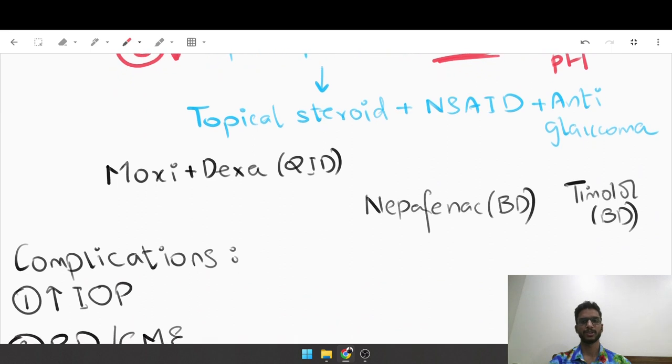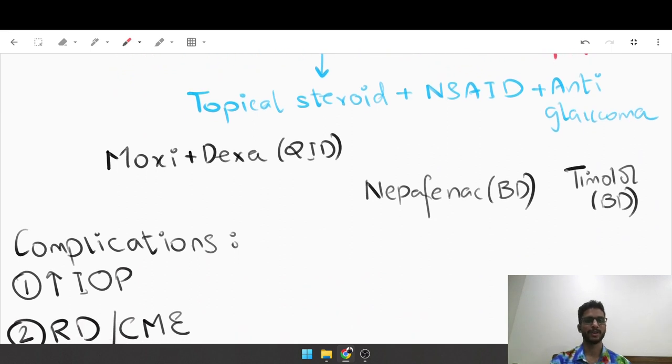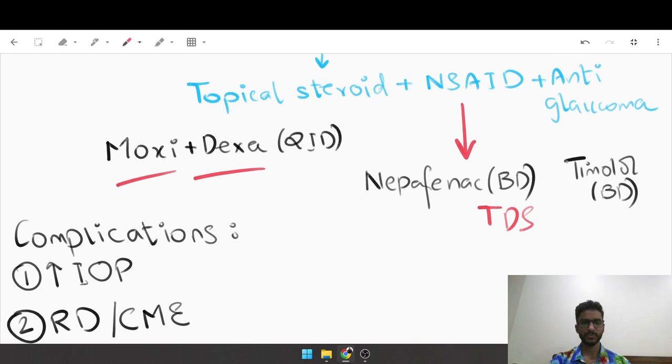Is the procedure done? No, after capsulotomy you have to perform certain therapeutic maneuvers. The first is instilling a topical steroid, an antibiotic and steroid combination to reduce the inflammation. These cells are going to get released into the anterior chamber and cause a rise in intraocular inflammation. You want to use moxifloxacin and dexamethasone, an NSAID again to reduce inflammation - nepafenac eye drop BD or TDS. And an anti-glaucoma medication to reduce the IOP spike by using timolol maleate BD.